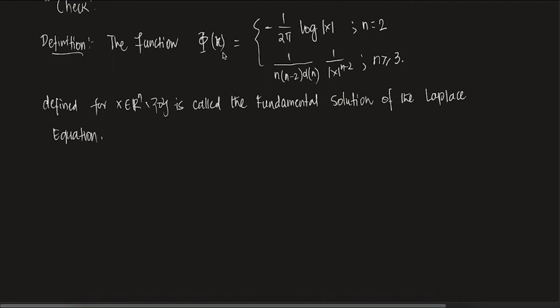As x tends to 0, this function blows up. At x = 0 it is not defined. So if we just leave out the origin, phi(x) is defined everywhere in R^n \ {0} and solves the Laplace equation everywhere except at 0. We call this the fundamental solution.